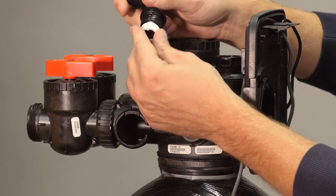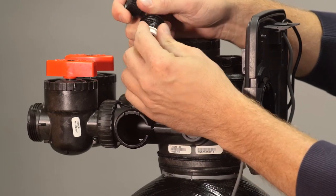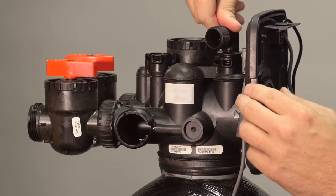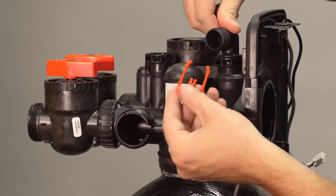Press the drain line flow control retainer into the drain elbow and press the drain elbow into the valve body. Secure it with the locking clip.